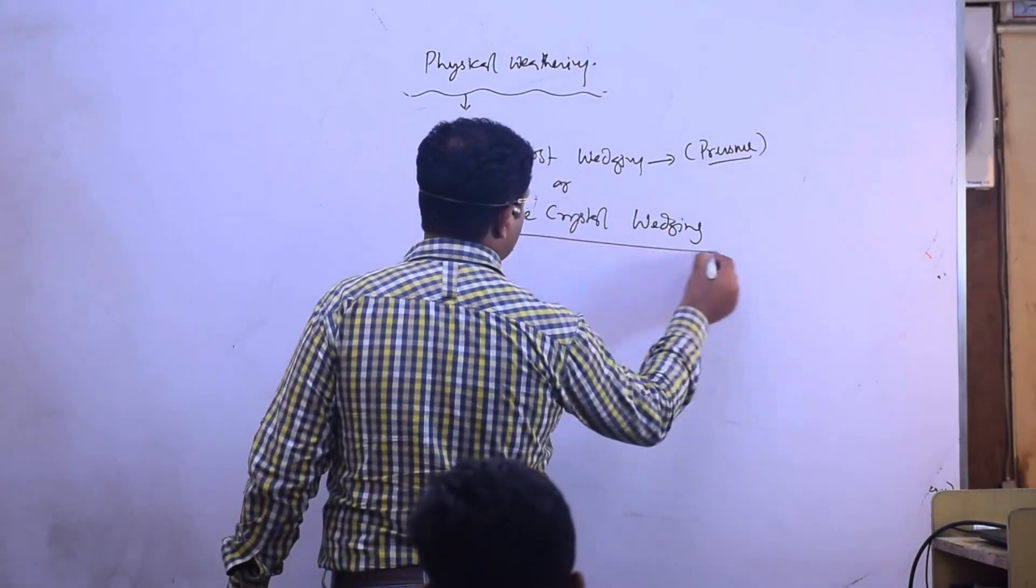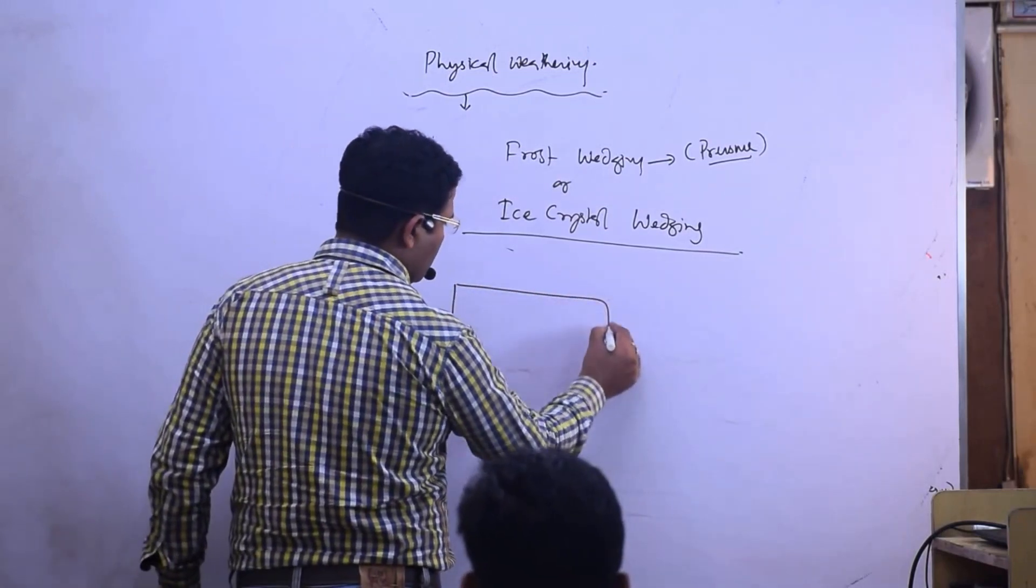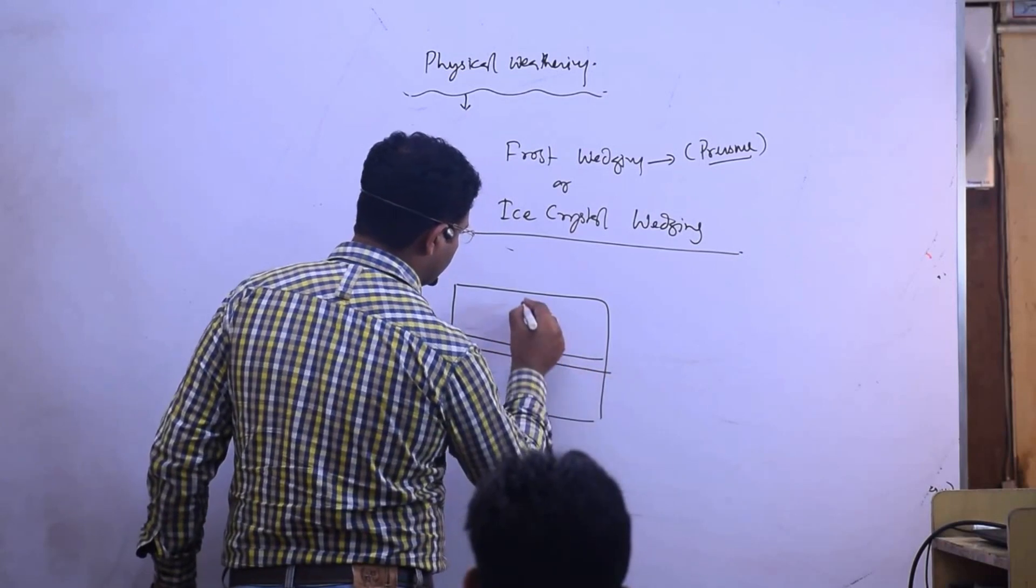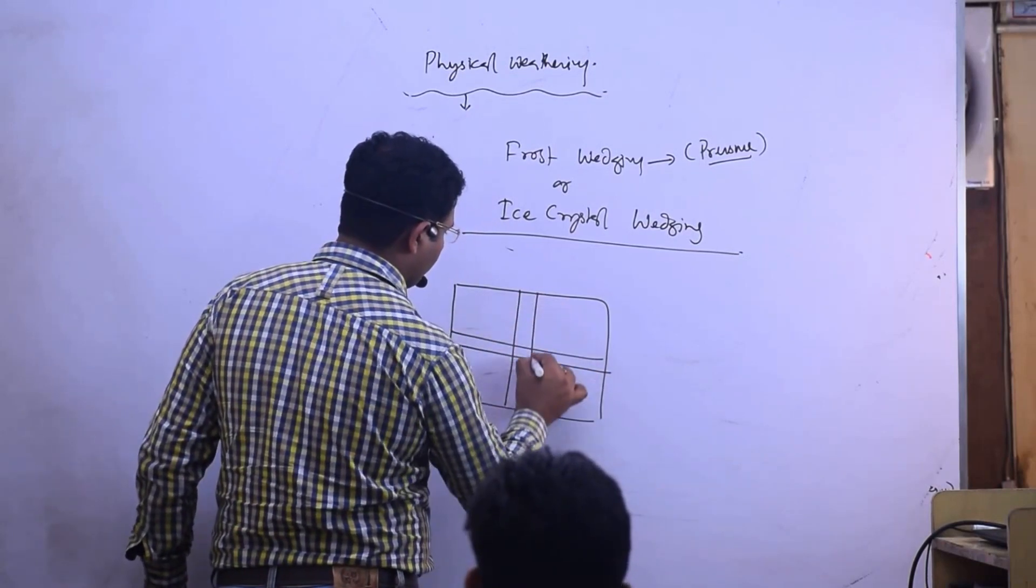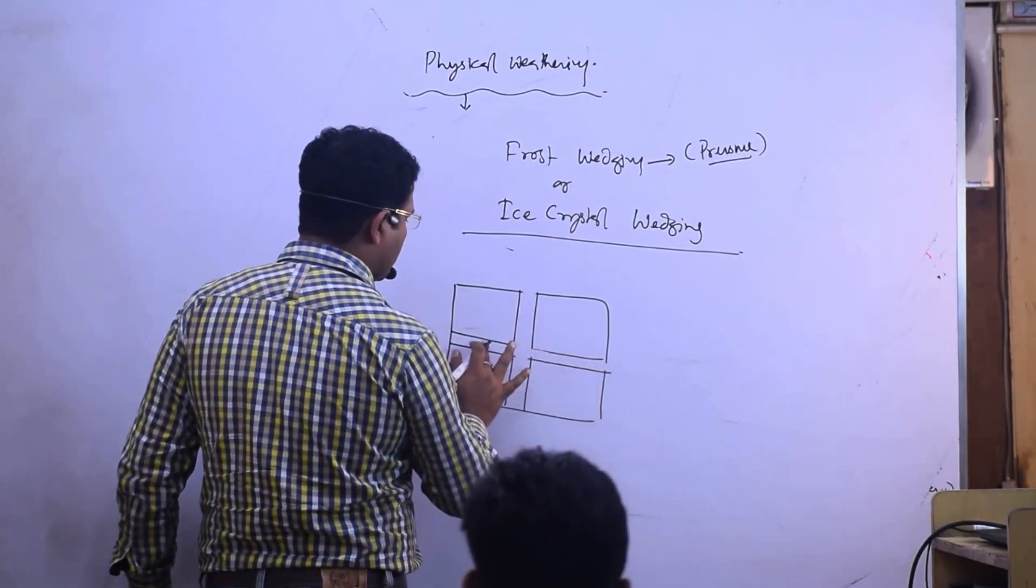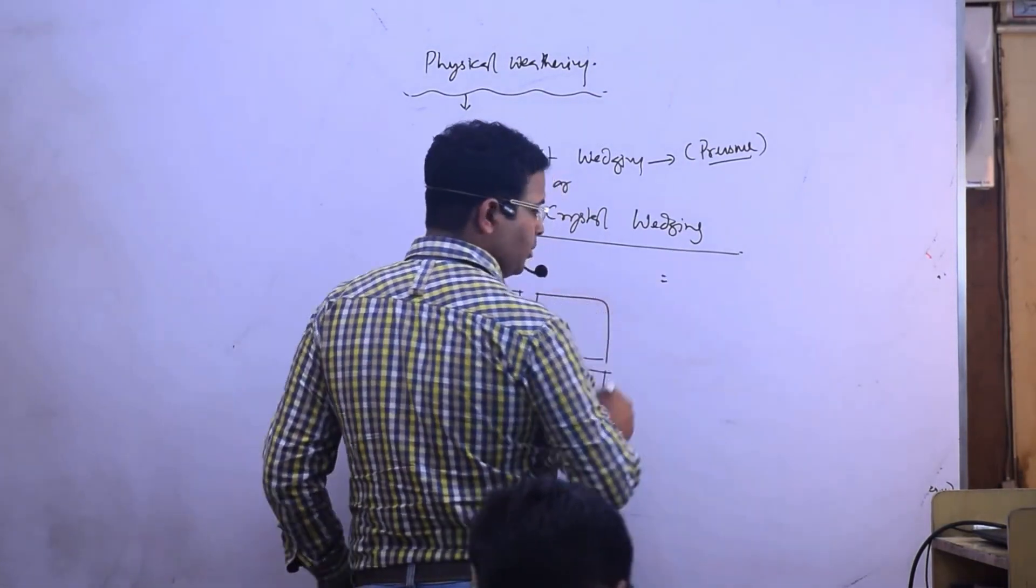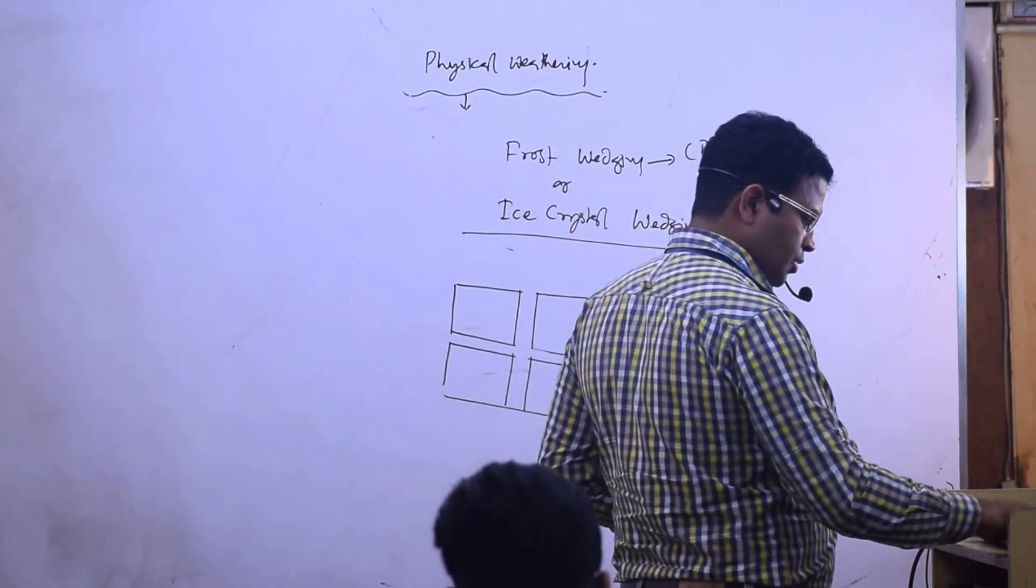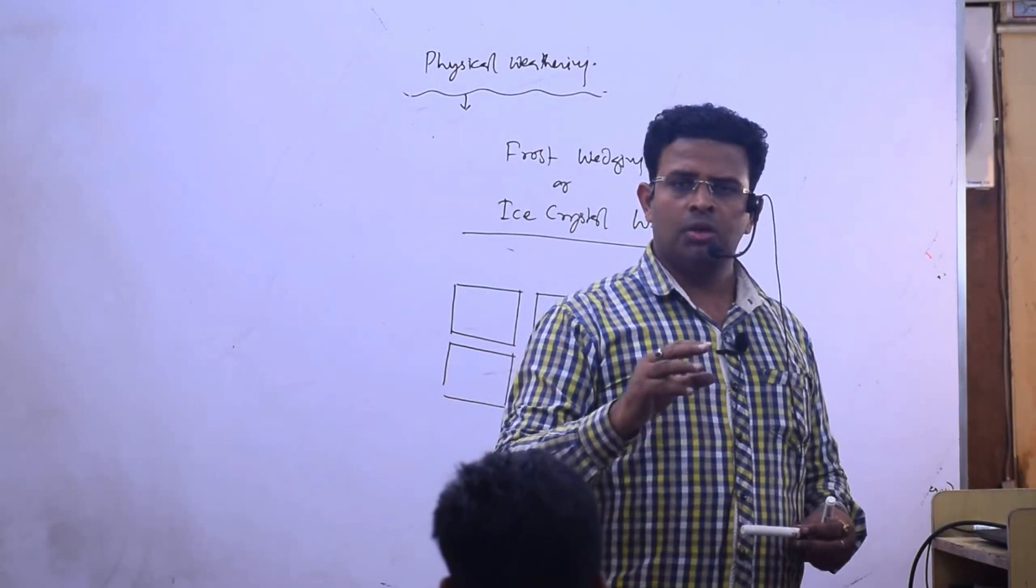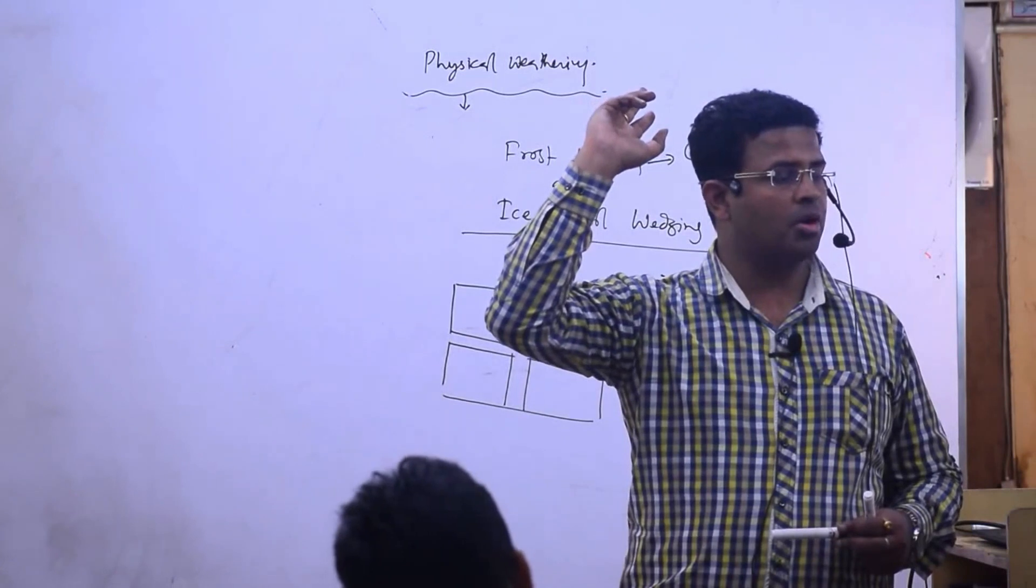Another point about frost weathering: suppose this is a rock, and in the rock there are some cracks or joints. I'm talking about cracks or joints. Question can be: what is weathering and which kind of weathering will take place in the higher mountainous region?